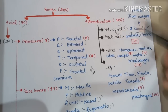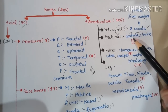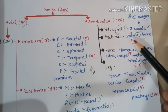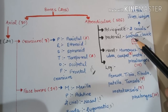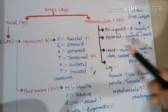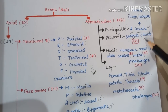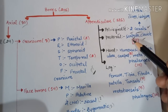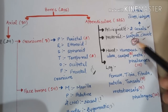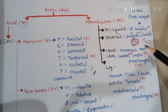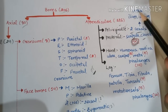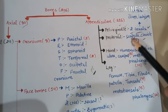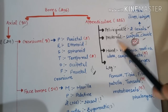In the pectoral girdle there are two bones: Scapula and Clavicle. We can memorize this as SC — like Supreme Court. Scapula is the triangular bone in our back just below the shoulders. So pelvic girdle has Ilium, Ischium, and Pubis; pectoral girdle has Scapula and Clavicle.